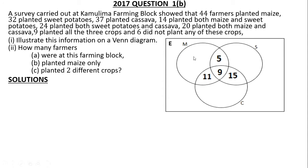Now find those who planted maize only, sweet potatoes only, and cassava only. Add 5 plus 9 plus 11 and subtract from 44 to find those who planted maize only — you get 19. Then add 5 plus 15 to get 20, plus 9 is 29, subtract from 32 — you get 3 who planted sweet potatoes only. Then add 11 plus 9 to get 20, plus 15 is 35, subtract from 37 — you get 2 who planted cassava only. The 6 who did not plant any crops go outside the sets.